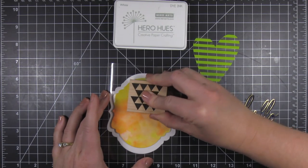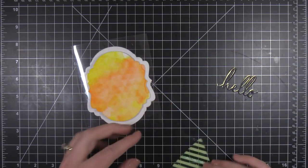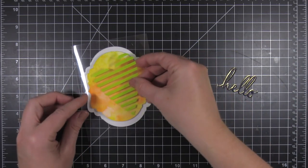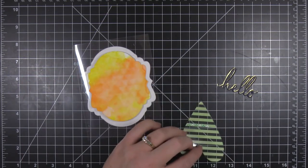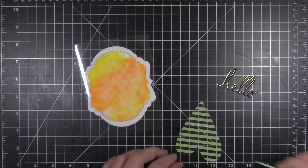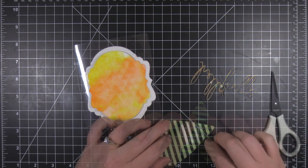Now this dye ink is not going to give you the same effect as a pigment ink. It is a much more muted effect. So if you want a bolder look, go ahead and use a pigment ink. Now you can see here, I've just added a little foam adhesive behind one of those stripes on the acetate because I wasn't sure if it would actually show through or not. So I was kind of experimenting there.